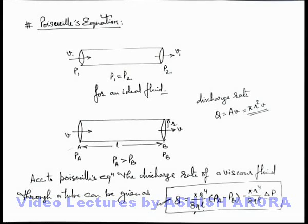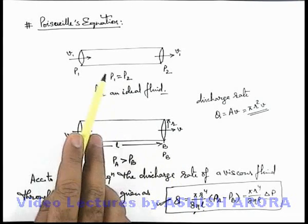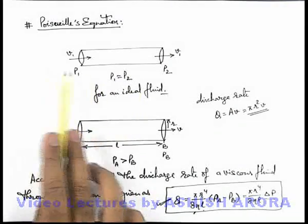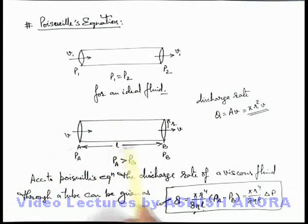So for uniform steady flow we need a pressure difference in case of a viscous fluid, whereas in case of ideal fluid we have discussed, no pressure difference is required to maintain the flow. And in viscous fluid we require a pressure difference to maintain a steady flow of liquid.